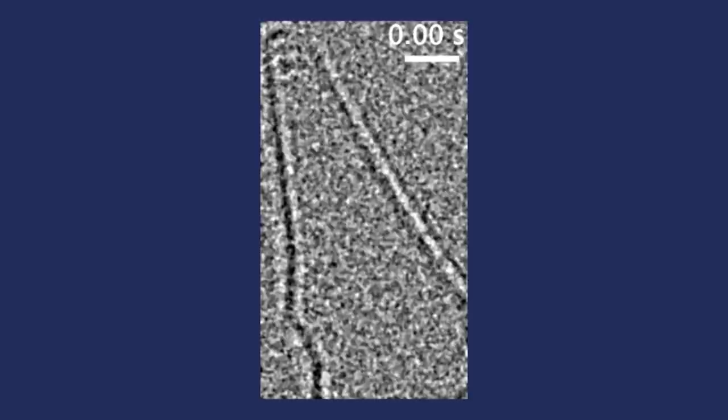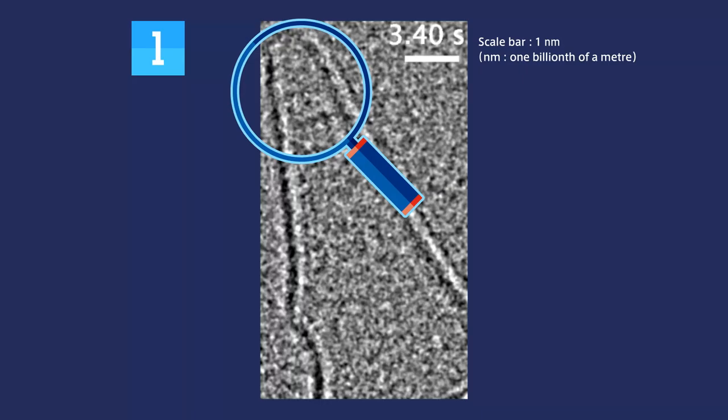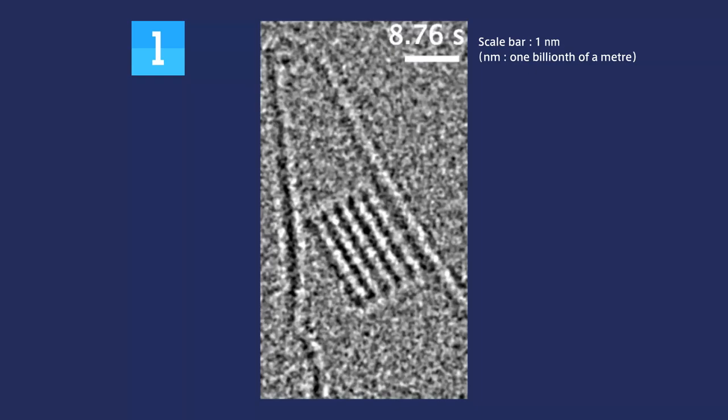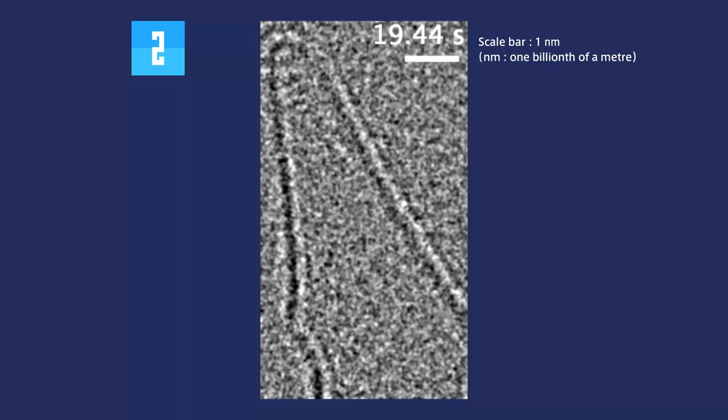First, sodium ions and chloride ions bind at the top of the carbon nanotube and become progressively larger. The size of each crystal is one nanometer. That is to say, one billionth of a meter. This is about 100,000 times smaller than the thickness of a human hair.